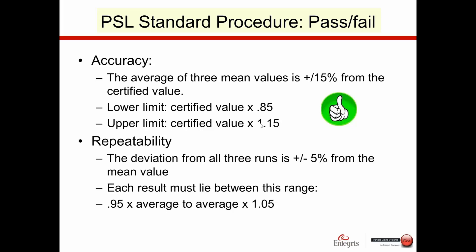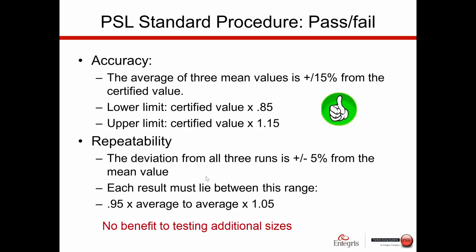The pass/fail criteria used when installing instruments in the pharmaceutical industry during an IQ/OQ is: plus or minus 15% on the intensity mean for accuracy, and plus or minus 5% for repeatability. If this criteria is met, you can confirm the system is working. With dynamic light scattering, there is no way to change a calibration curve or otherwise alter the system — you either pass or you fail.